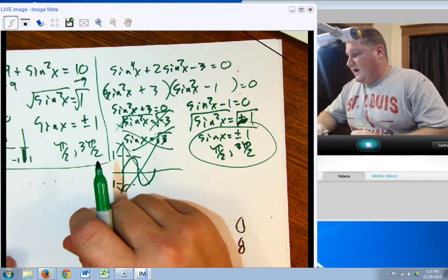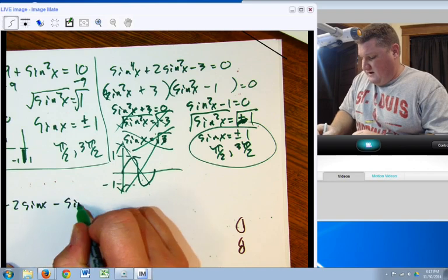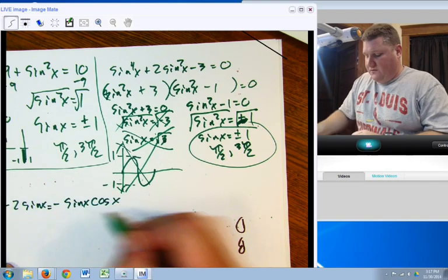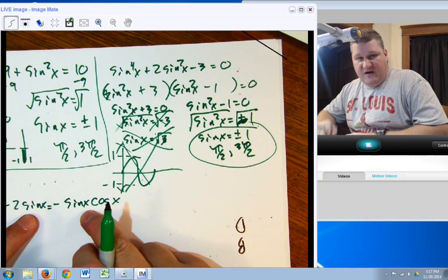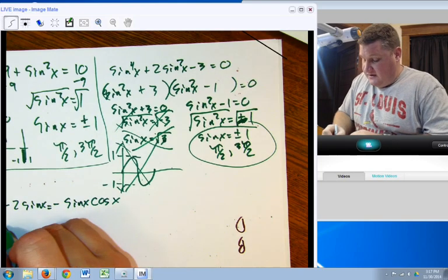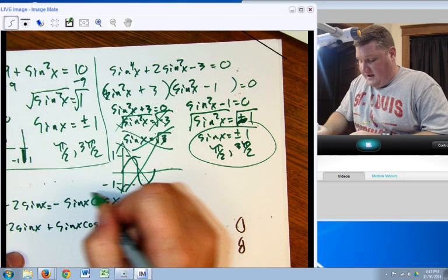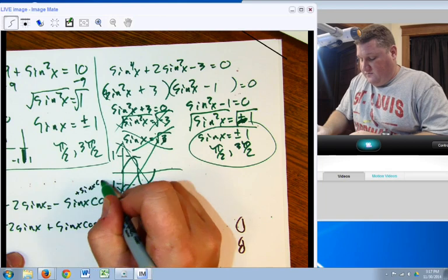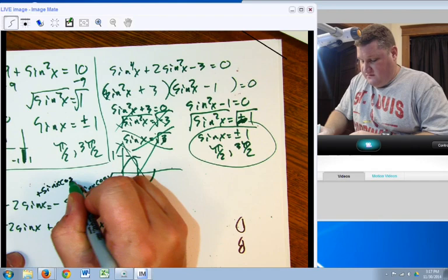Let's take a look at negative 2 sine x minus sine x cosine x equals. Now, this is the same problem we had, whereas I could divide both sides by sine x, but if I divide by sine x, I could be potentially dividing by 0. So, let's get everything to one side, negative 2 sine x plus sine x cosine x equals 0 by adding sine x cosine x to both sides. And now, I have a sine x in each piece. Let's factor it out. Negative 2 plus cosine x equals 0.